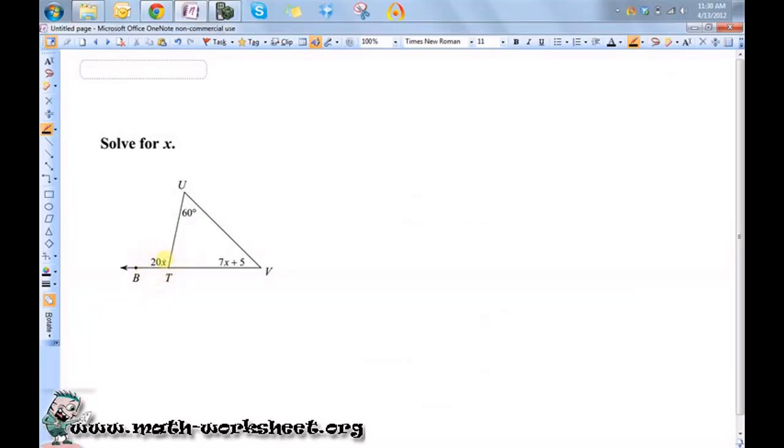The measure of an exterior angle is equal to the sum of its non-adjacent interior angles. So that means that this angle's measure is equal to the sum of these two angles' measures.